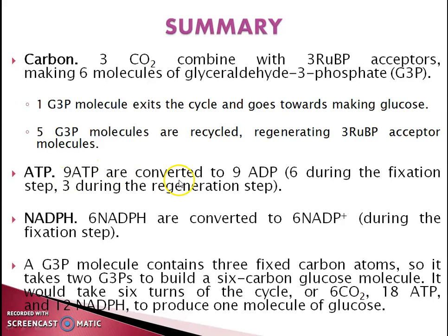In total, 9 ATP are converted to 9 ADP: 6 ATPs are utilized during the reduction phase, and 3 ATPs are utilized during the regeneration phase — that is, the conversion of triose phosphate to RuBP. 6 NADPH are converted to 6 NADP+ during the reduction of PGA to triose phosphate. A G3P molecule contains 3 fixed carbon atoms, so it takes 2 G3P molecules to build a 6-carbon glucose molecule. Therefore, 6 turns of the cycle — or 6 CO2 molecules — are needed to produce 1 molecule of glucose, requiring 18 ATP and 12 NADPH.